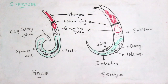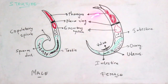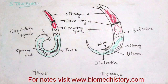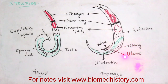The roundworm consists of a male roundworm as well as a female roundworm. The main difference between them is that the male roundworm consists of testes, but the female roundworm consists of ovaries.